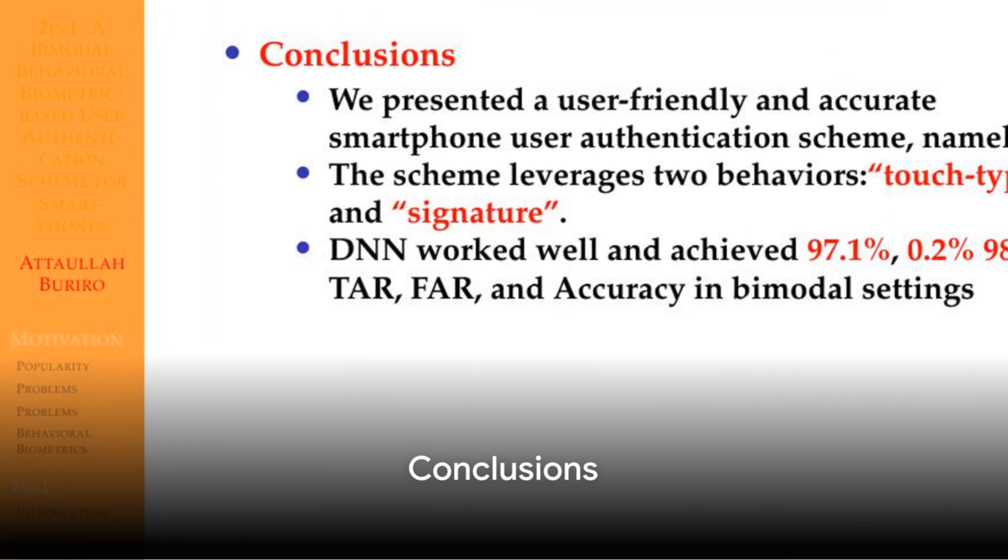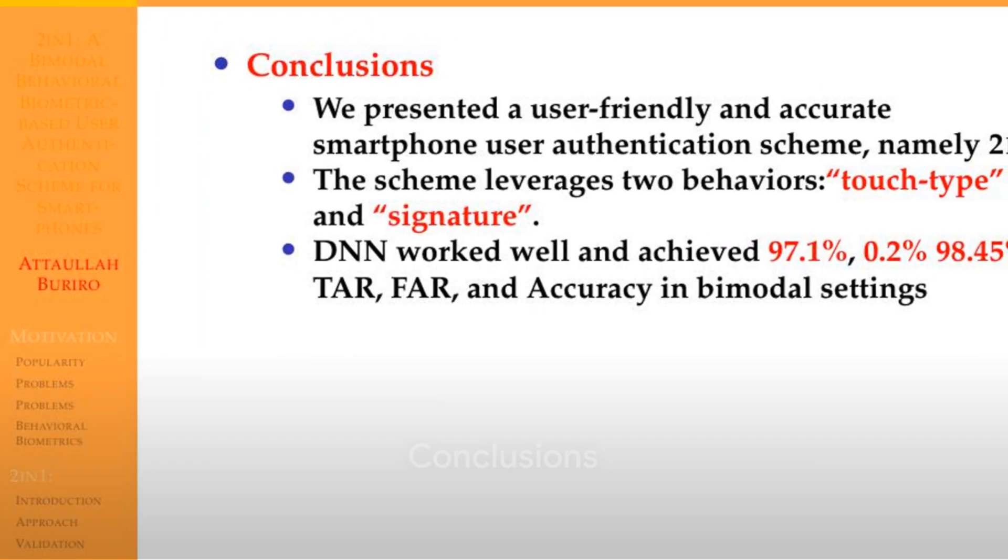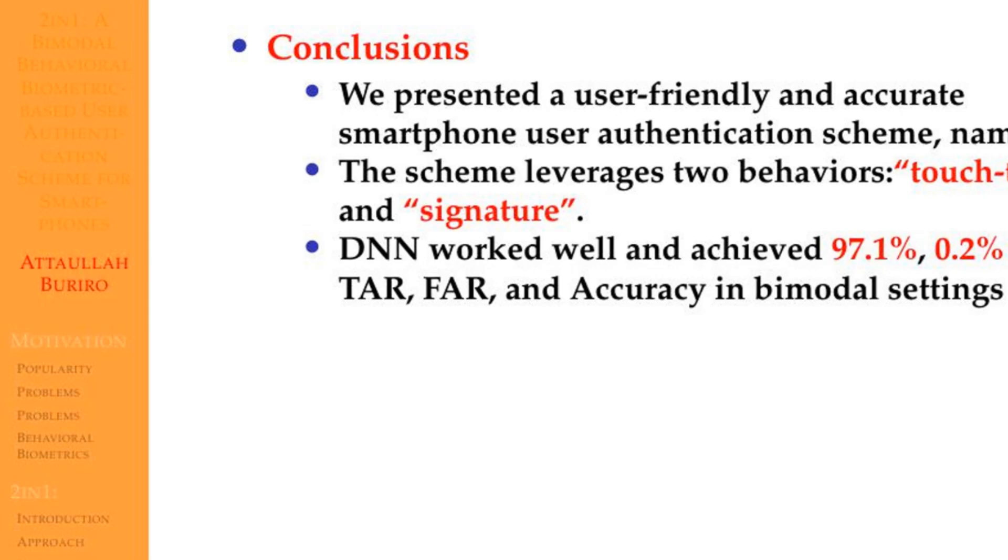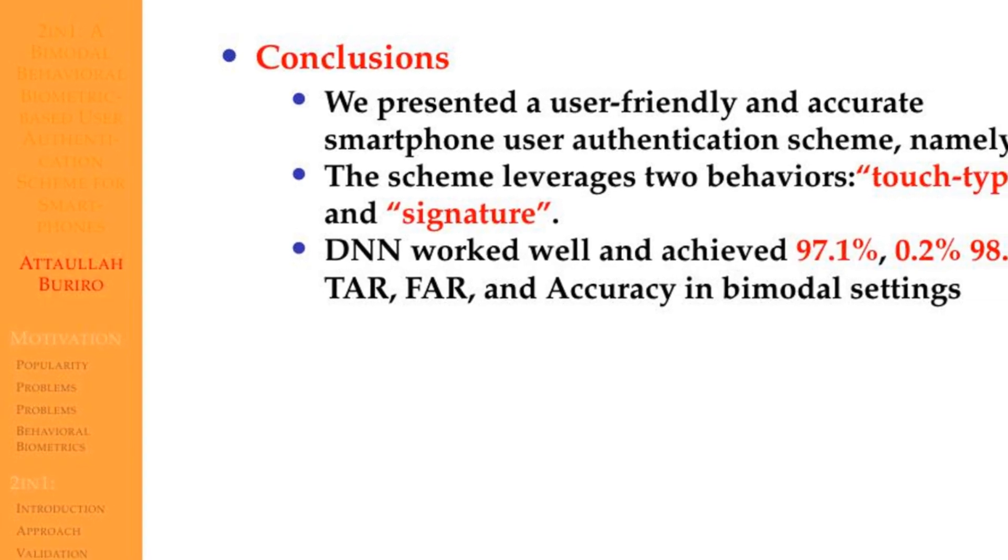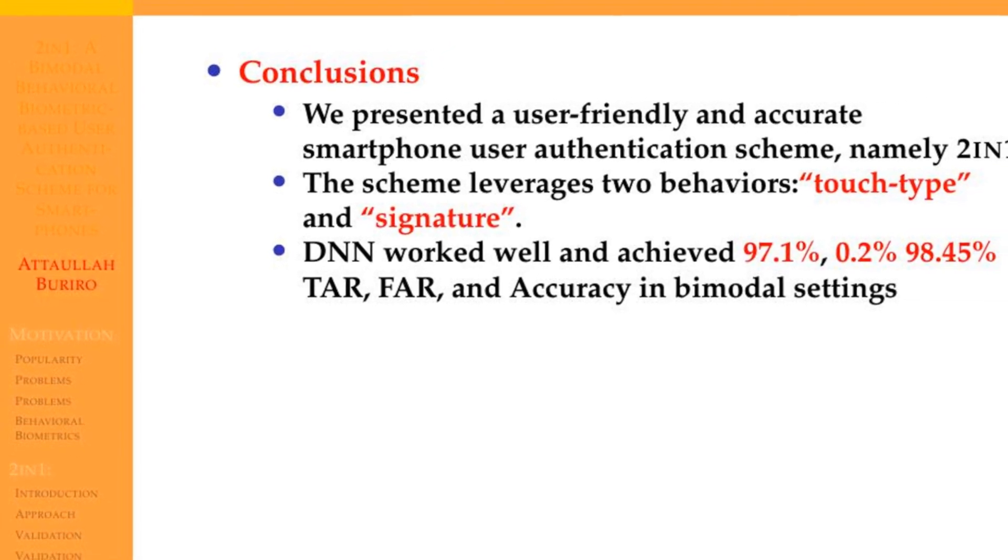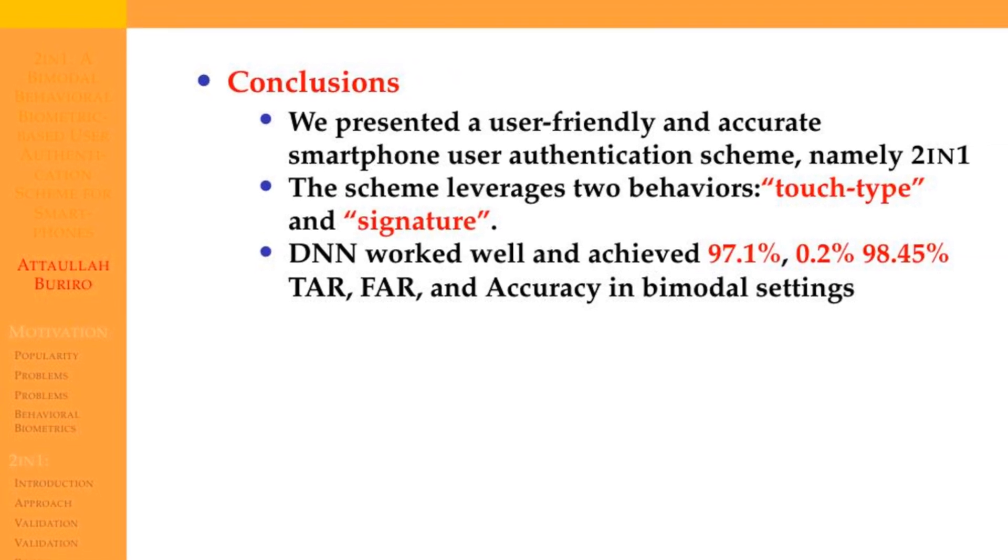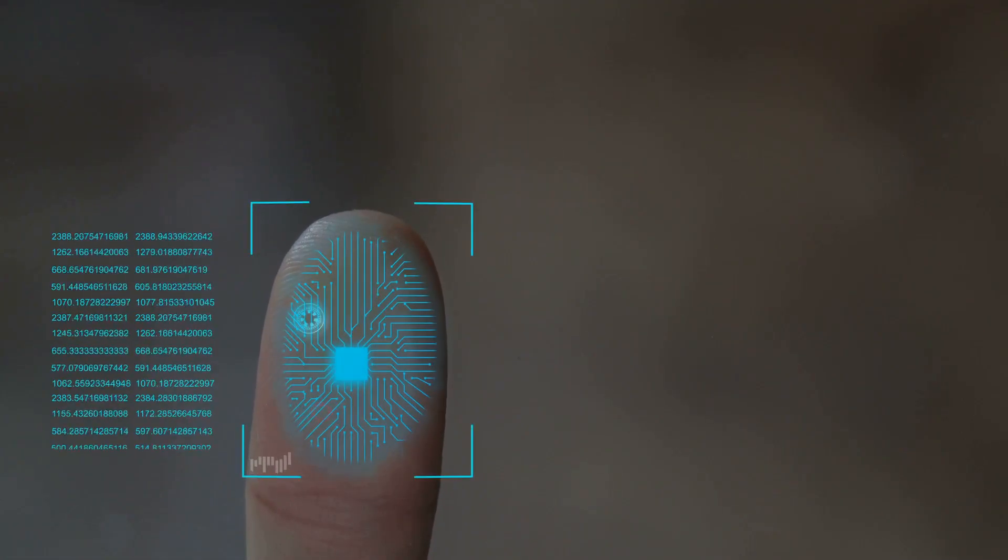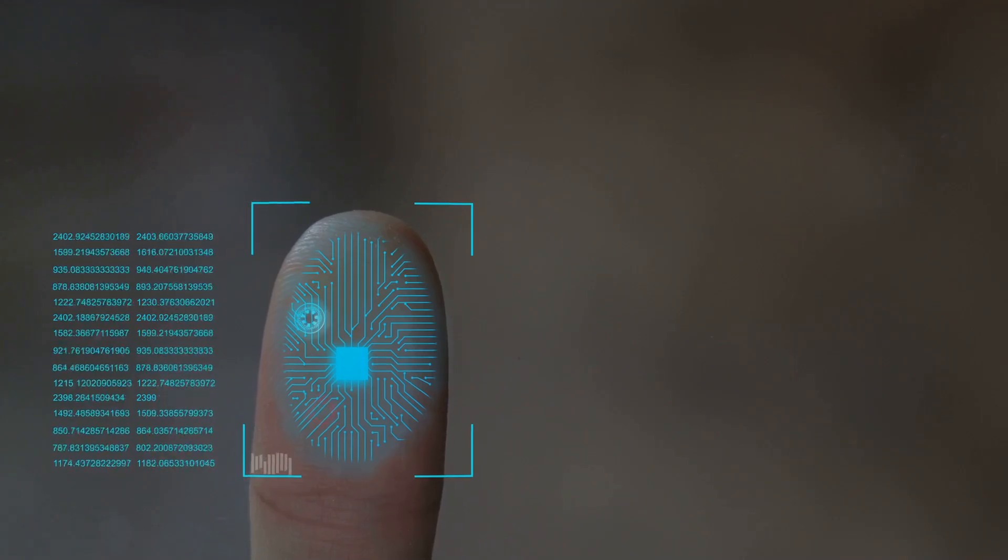We present a user-friendly and accurate smartphone user authentication scheme, namely 2-in-1. The scheme leverages two behaviors: touch type and signature. DNN achieved 97.1% TAR, 0.2% FAR, and 98.45% accuracy in bimodal settings.